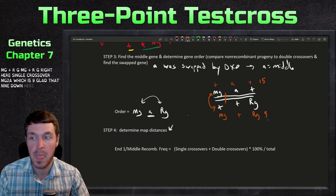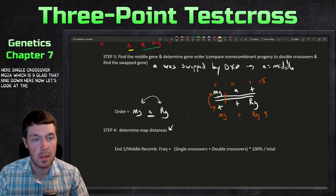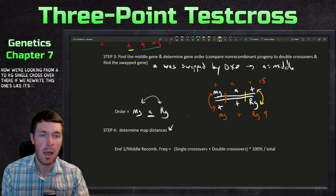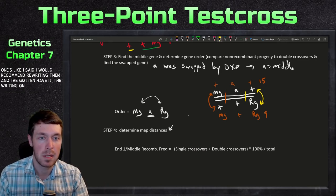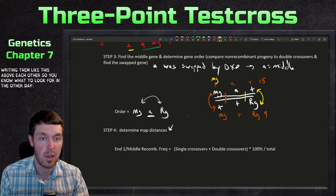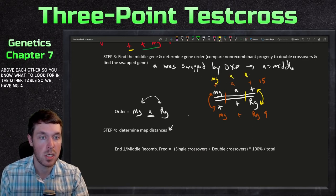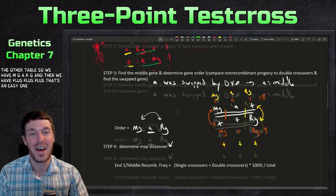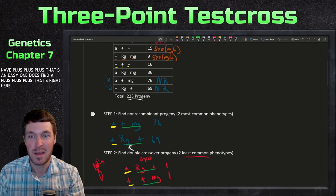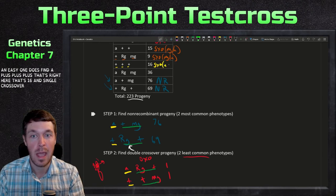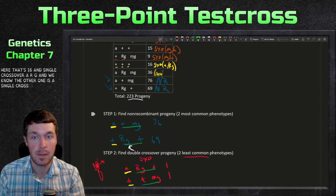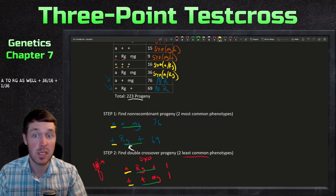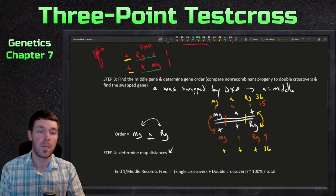Now looking at the other region, from a to rg, a single crossover there would give mg-a-rg and plus-plus-plus. Looking at the table, plus-plus-plus gives 36 and mg-a-rg — wait, a-plus is 16. So single crossovers from a to rg are 16 and 36. We write those numbers down for use in the next step.